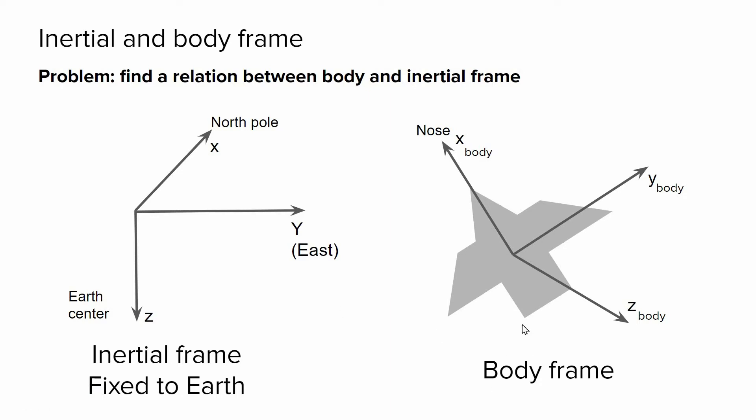Also we have a body frame fixed to the body of an object. So the attitude estimation is basically finding a relation between the body frame and the inertial frame.